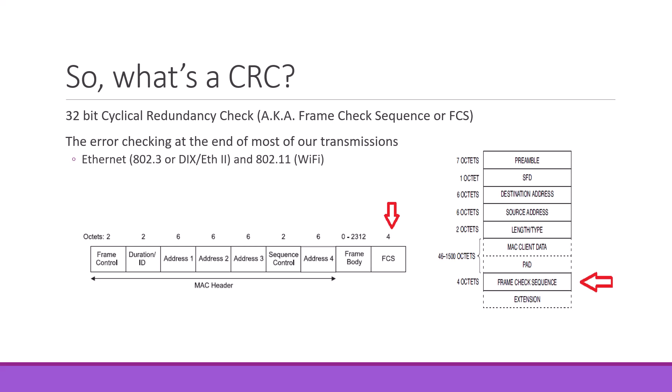When we send data across a network we almost always have some form of error checking, and in the case of our local area networks — in particular Ethernet and 802.11 — the thing at the end for error checking is called the CRC-32. Looking at images from the actual standards: on the left we have an 802.11 Wi-Fi frame with a four-byte Frame Check Sequence at the end — that's the CRC. On the right we have the 802.3 Ethernet standard, and whether you're talking about 802.3, DIX, or Ethernet Type 2, they all do the same thing: the Frame Check Sequence, or CRC-32, is at the end of the frame. All local area network protocols used today use CRC-32.